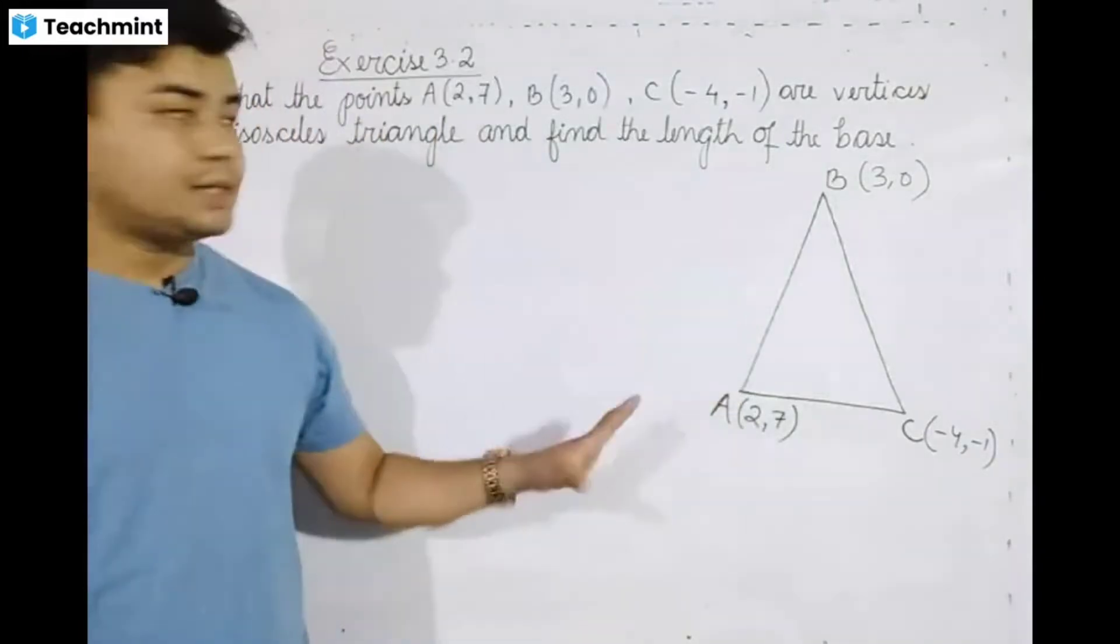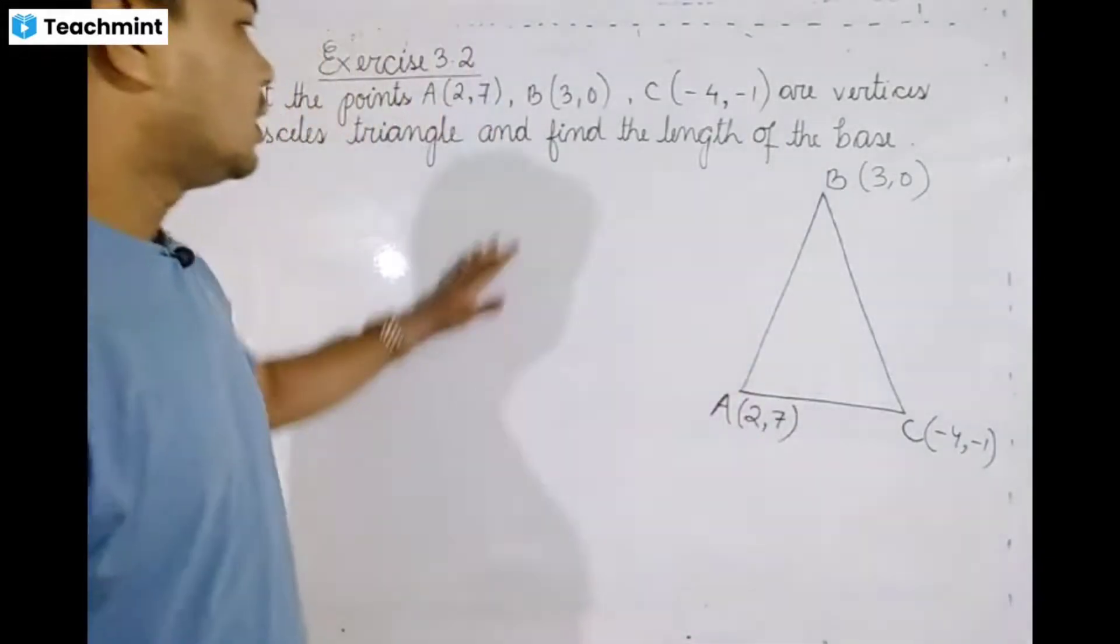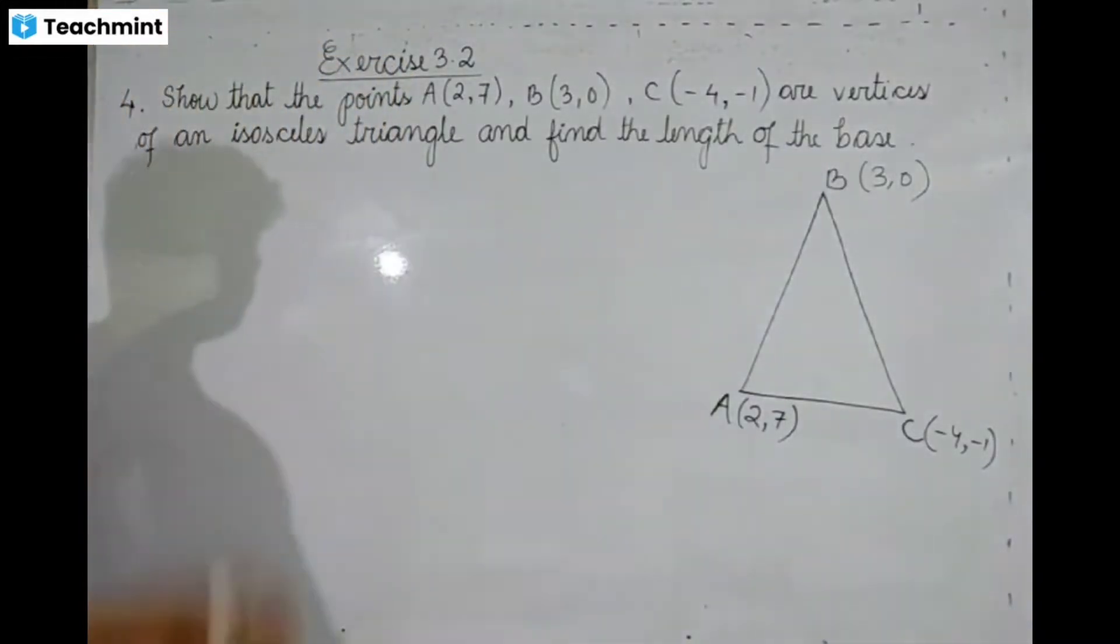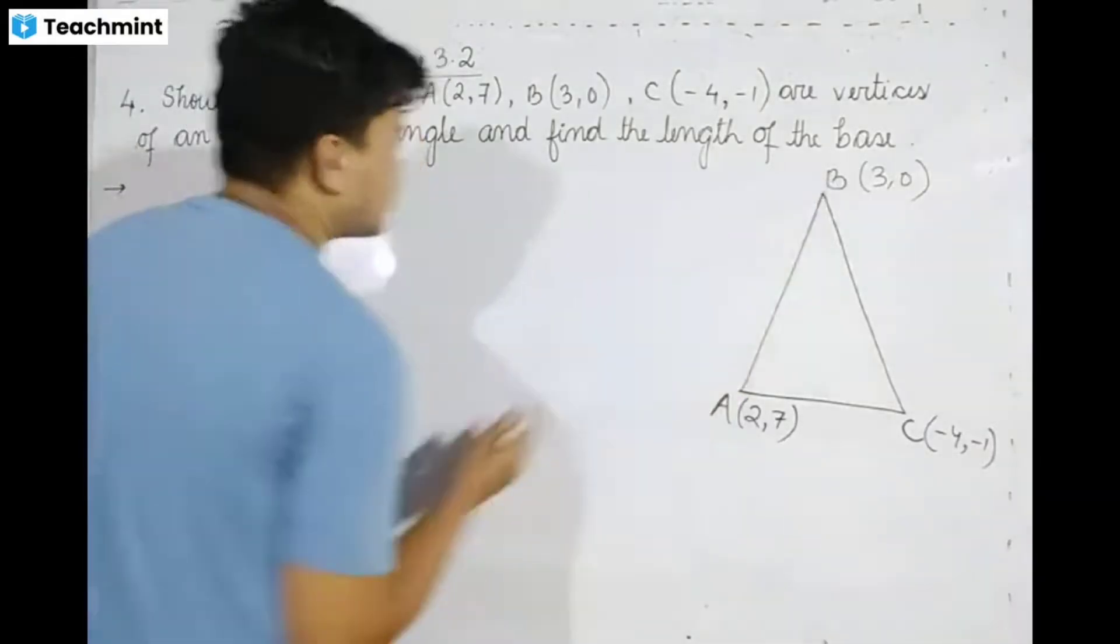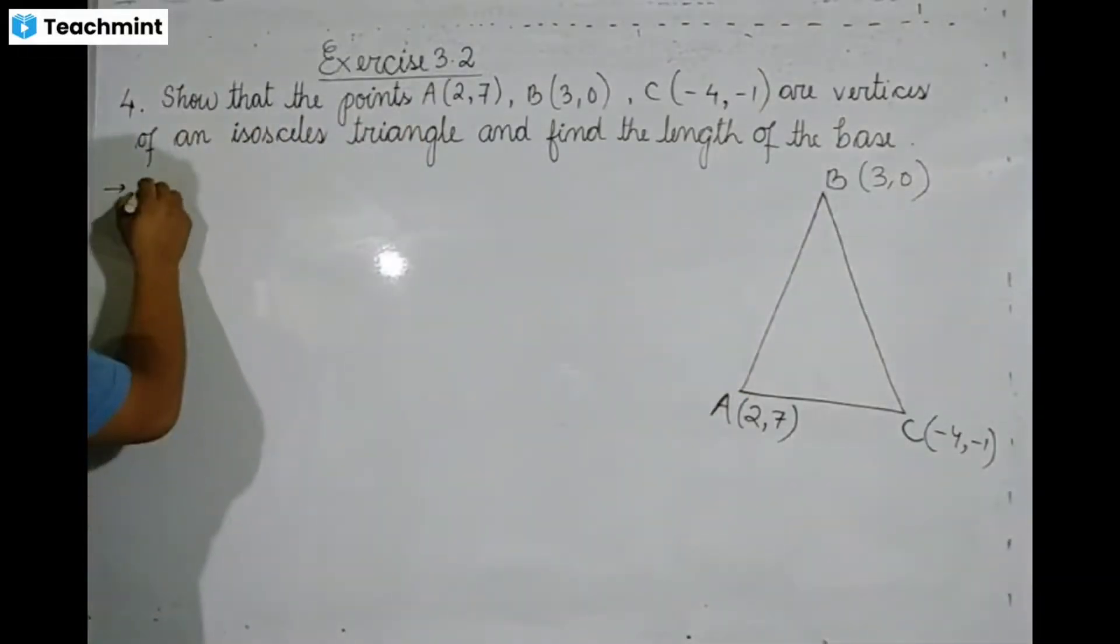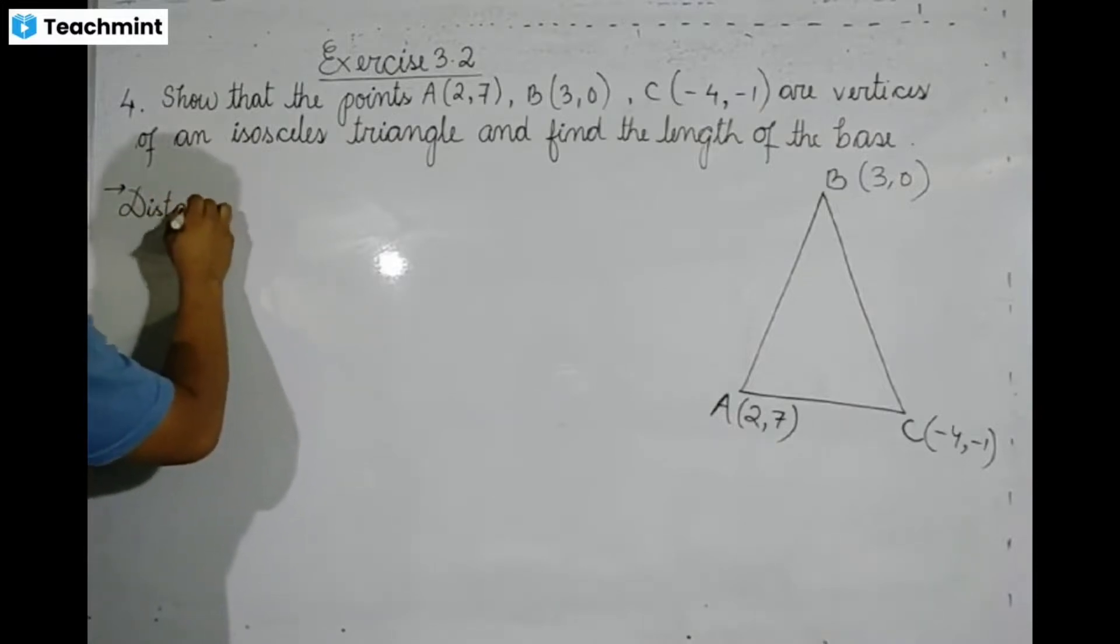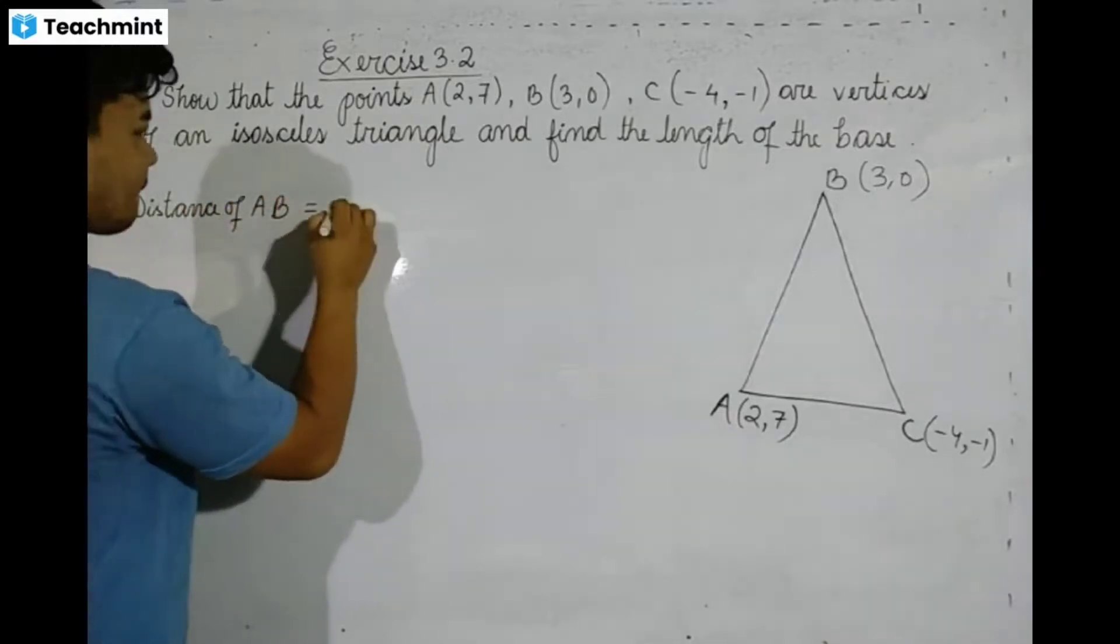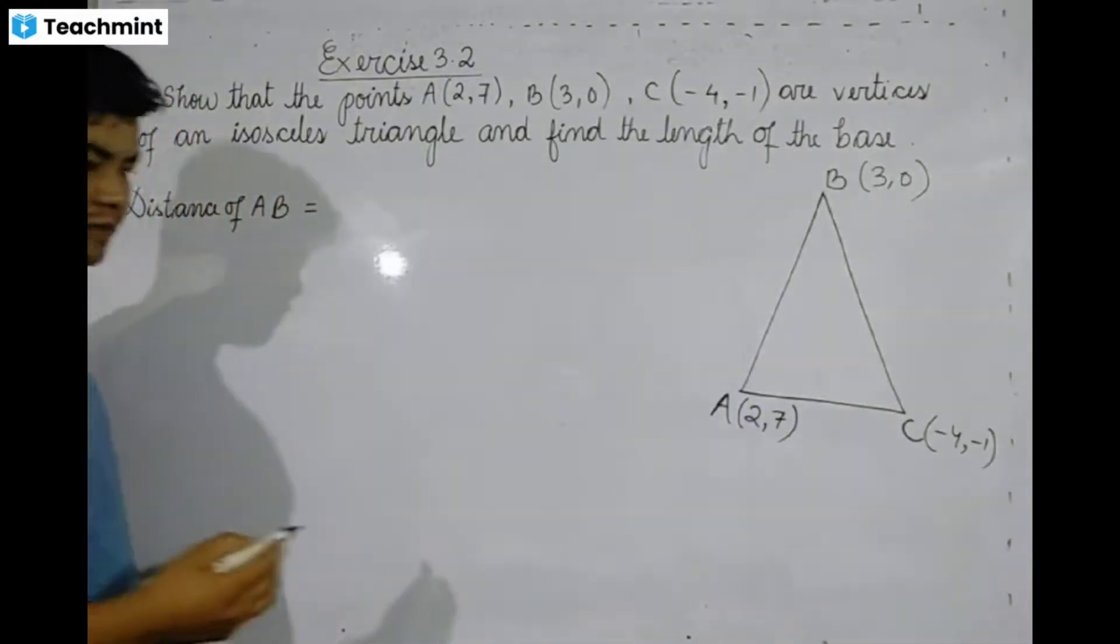To prove this is an isosceles triangle, we need to find the distances AB, BC, and AC. I'll use the distance formula between two points.